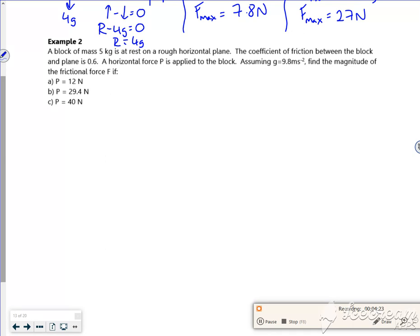is at rest on a rough horizontal plane. The coefficient of friction between the block and the plane is 0.6. So it's 5 kilos, it's 0.6. A horizontal force P is applied to the block. Assuming G is 9.8, find the magnitude of the frictional force if...